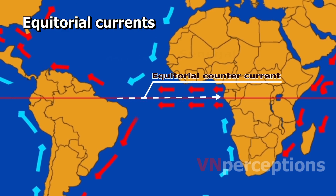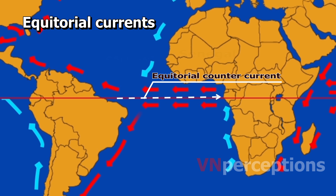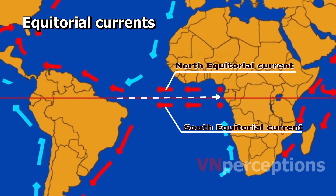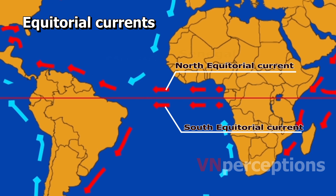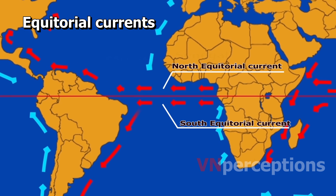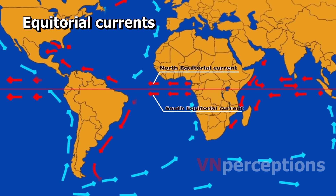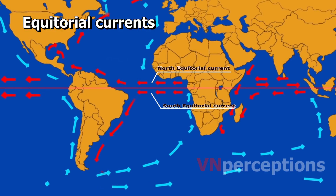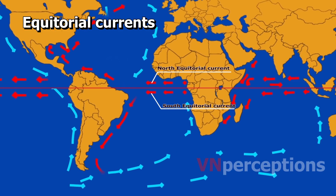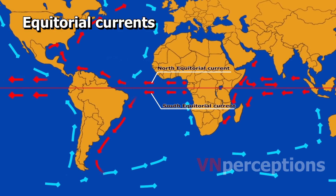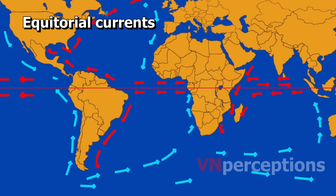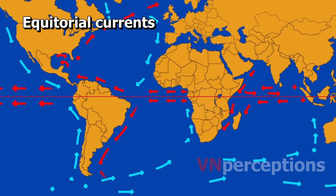The North and South Equatorial Currents pile water up against the western coast of South America, and because of the trade winds they are weak along the equator.